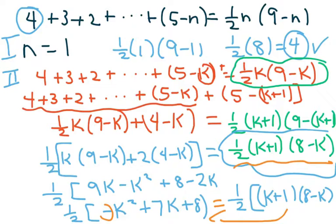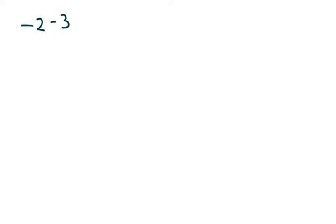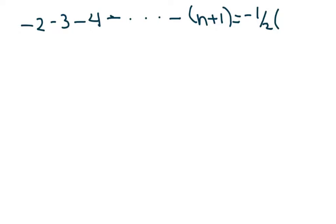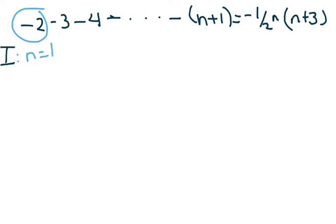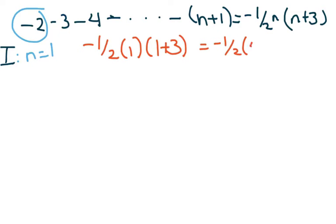We're going to do one more. This one has negatives: negative two minus three minus four minus dot dot dot minus (n plus one) equals negative one-half n times (n plus three). Check condition one — for n equals one we should get negative two: negative one-half times one times (1 plus 3) equals negative one-half times four equals negative two. It checks.